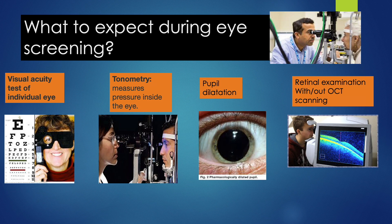What can you expect when you visit an eye doctor? We will check the visual acuity of each individual eye. We will measure the pressure of the eye using a tonometer. Don't worry — we will be using local anesthesia during examination, so the patient will not experience pain.